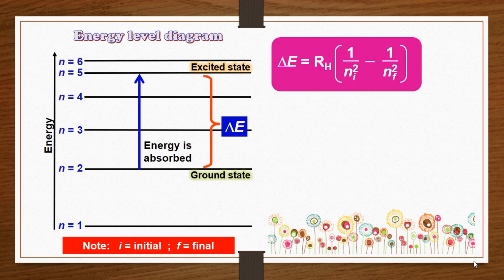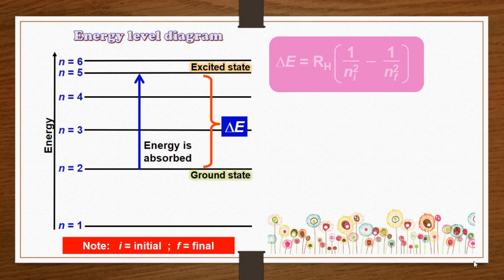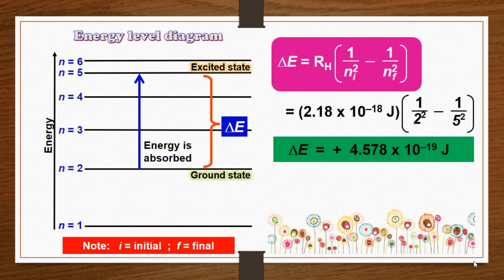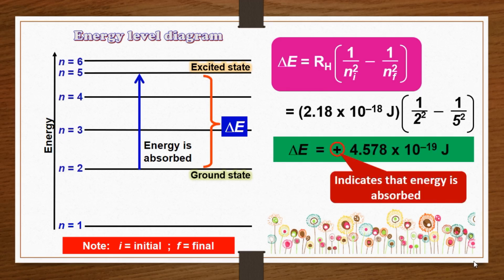We can calculate the energy absorbed by the electron by using this equation. When energy is absorbed, the delta E is positive.